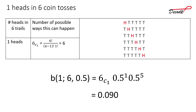For 1 head in 6 coin tosses, we can get 1 head in 6 ways — for example, getting a head on the very first toss, and so on. So 6_C_1 = 6, and the probability is 6 × 0.5^1 × 0.5^5, where 0.5^5 represents 5 failures. The probability turns out to be 0.090.